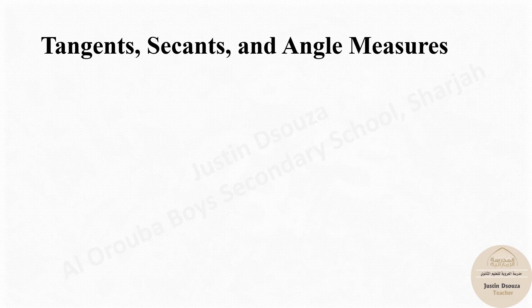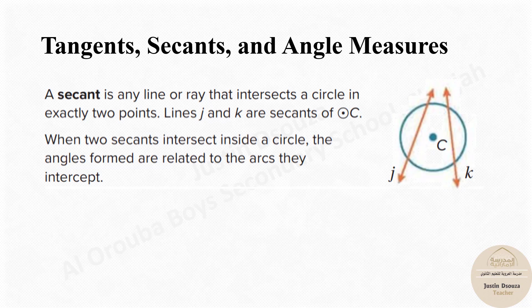Let's look into what exactly a secant is. A secant is a line which is similar to a chord but it extends outwards from the circle. You can see this is going infinitely. So this is a secant and even this over here, the line J and K, both are secants.